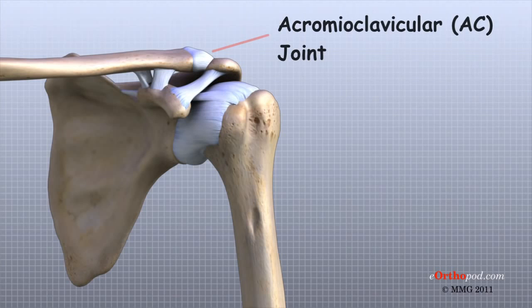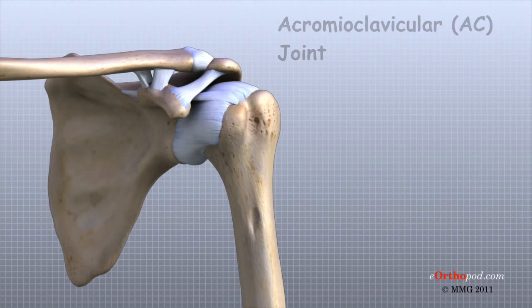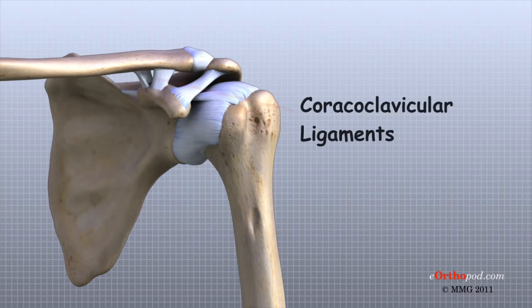Ligaments attach the clavicle to the acromion in the AC joint. Two ligaments connect the clavicle to the scapula by attaching to the coracoid process, a bony knob that sticks out of the scapula in the front of the shoulder.